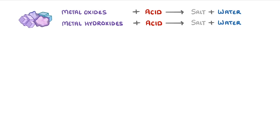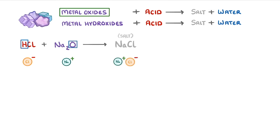For example, if we combined hydrochloric acid with sodium oxide, which is a metal oxide, the positive sodium ions and negative chloride ions would combine to form sodium chloride, which is the salt, while the hydrogen and oxygen would form water. And if we balanced it, it would look like this.